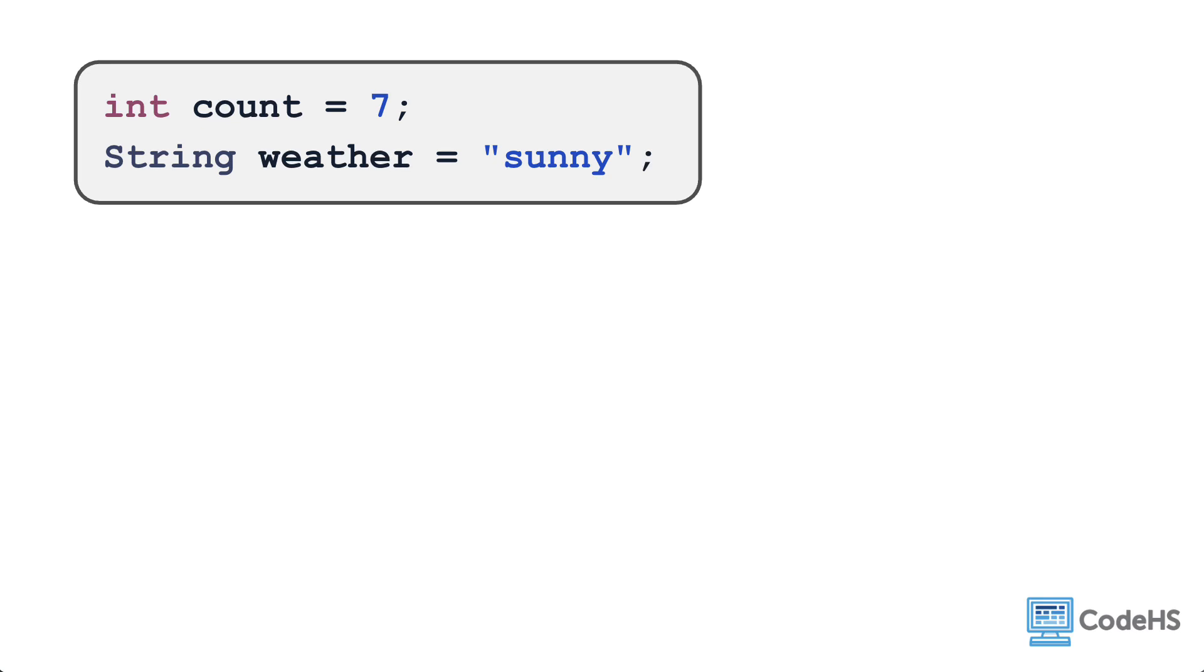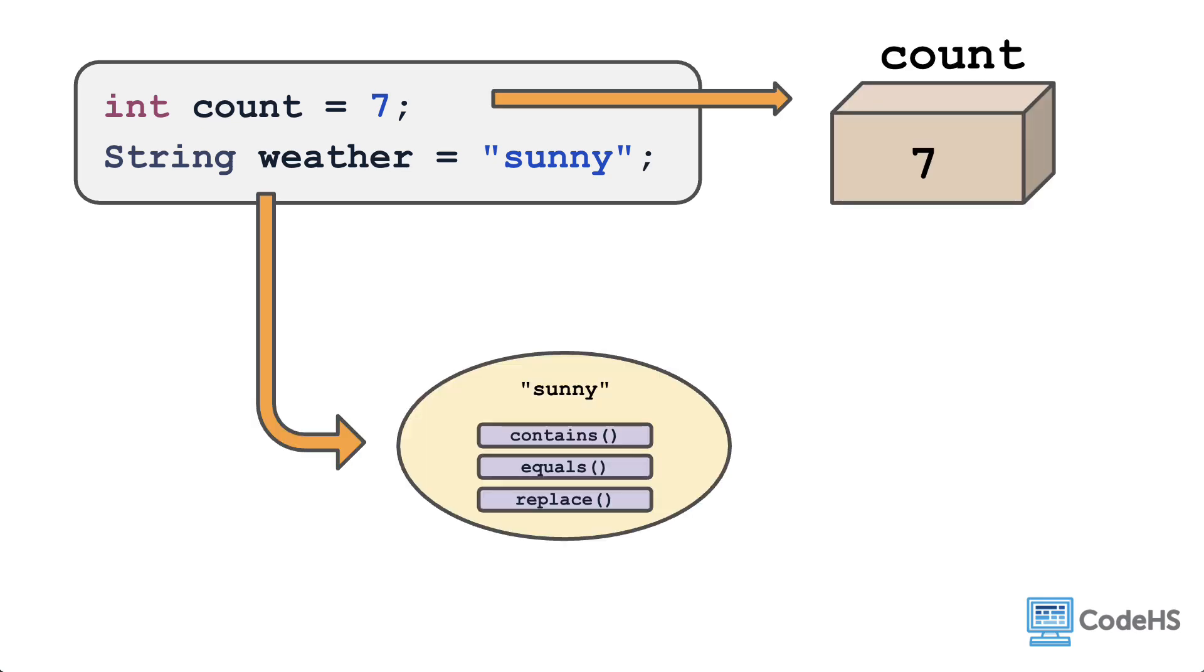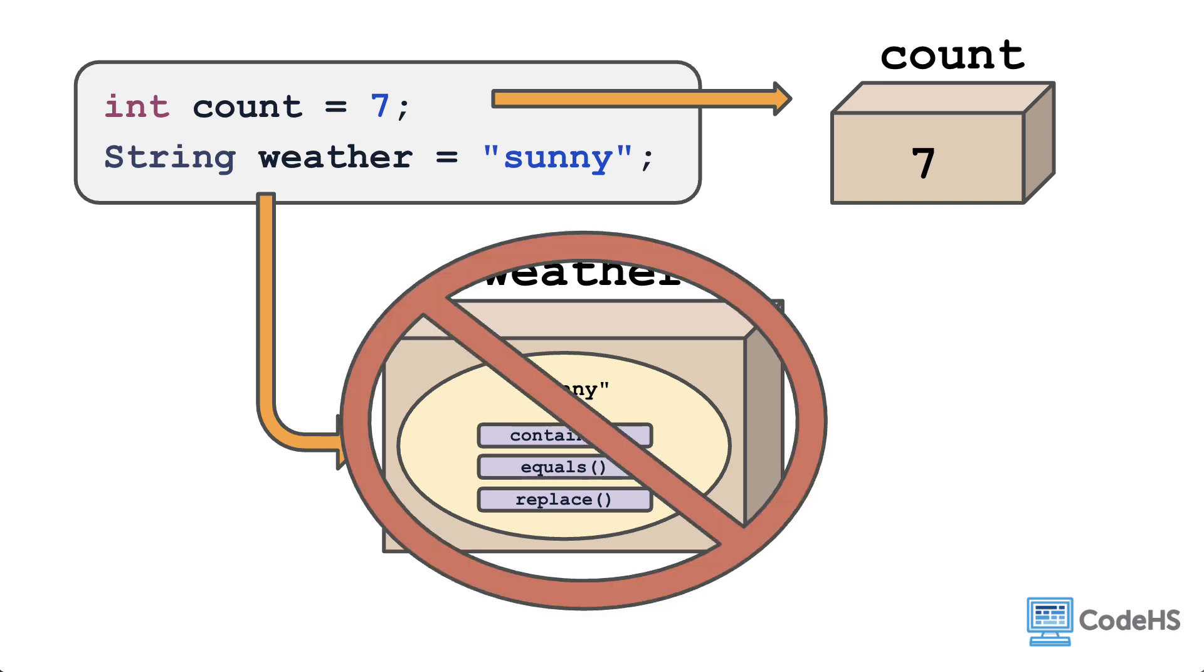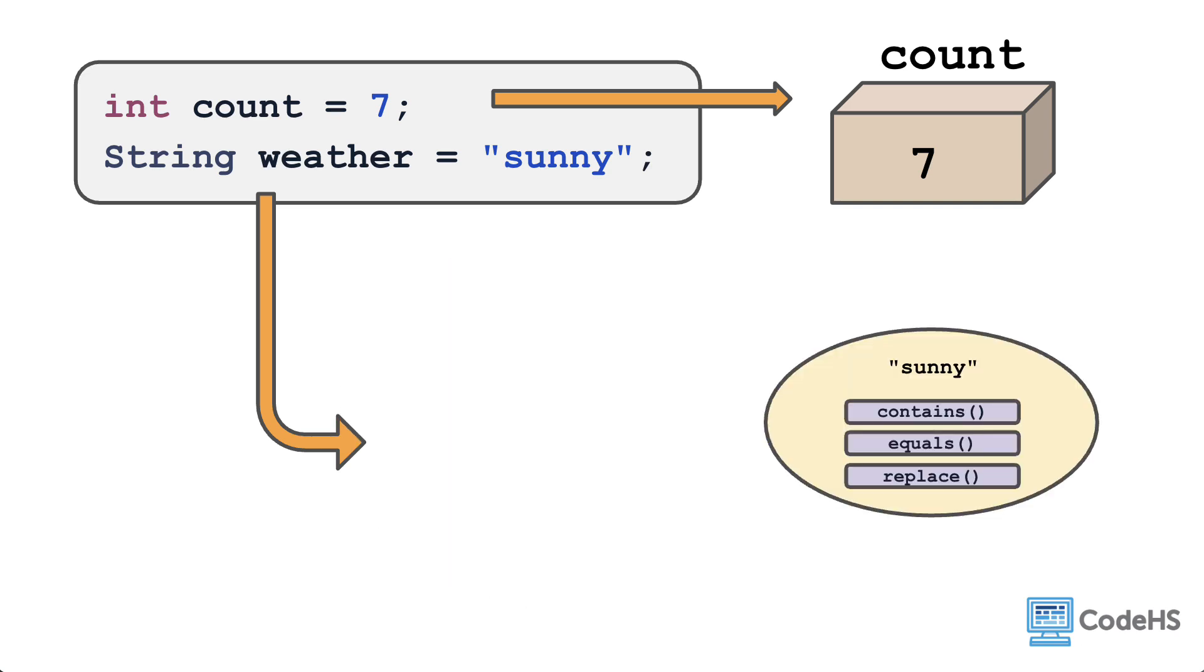A primitive data type is a simple piece of information, which is stored directly in the variable itself. An object data type, on the other hand, is not a simple singular piece of information. It can contain many different attributes and many different methods. For a variety of reasons, including memory efficiency and management, an object is not stored directly in the variable itself. Instead, the object is stored at some particular location in memory. Let's pretend 0x006 is how Java would label that location, and then the variable weather would store that location reference.